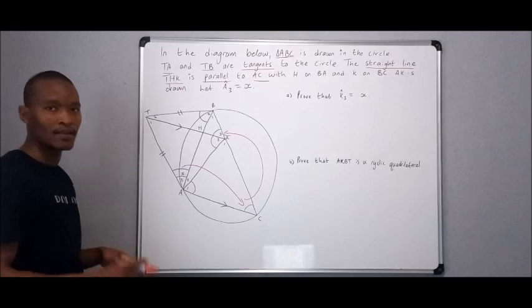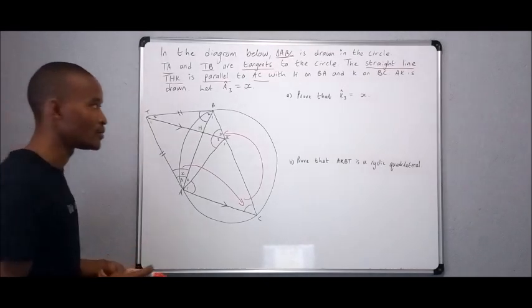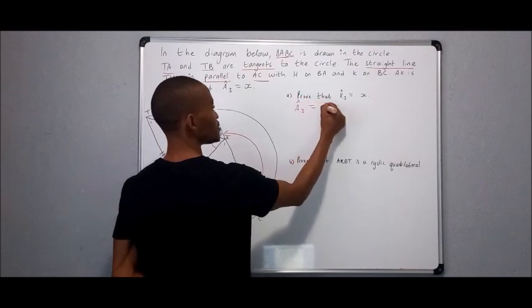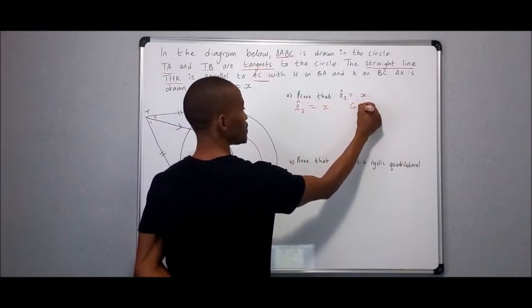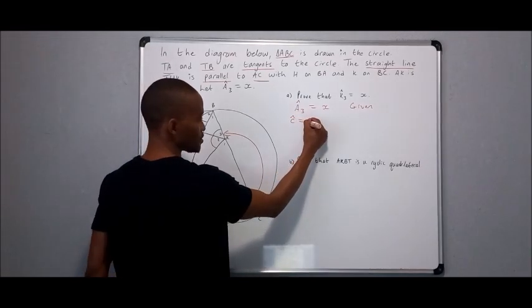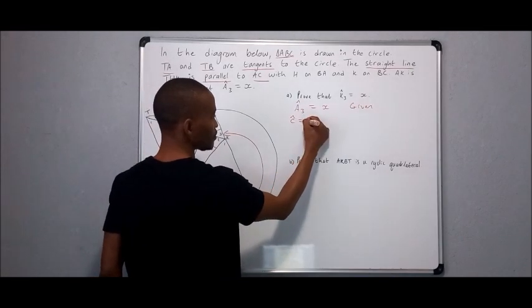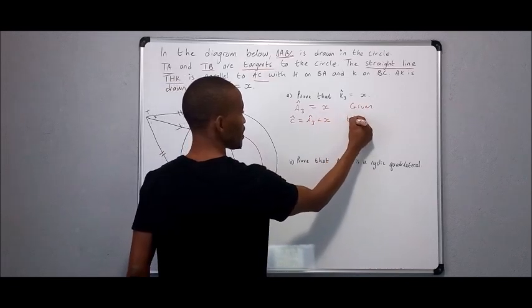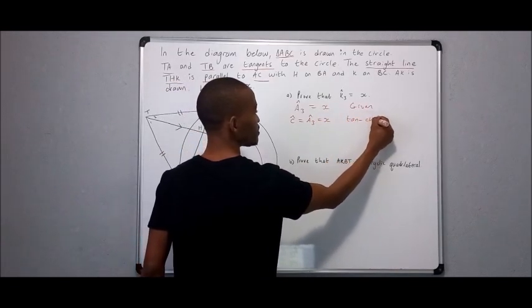So we know that angle A3 is equal to x, this is given. However, angle C is equal to angle A3, it's also equal to x, but this is by the ten-chord theorem.